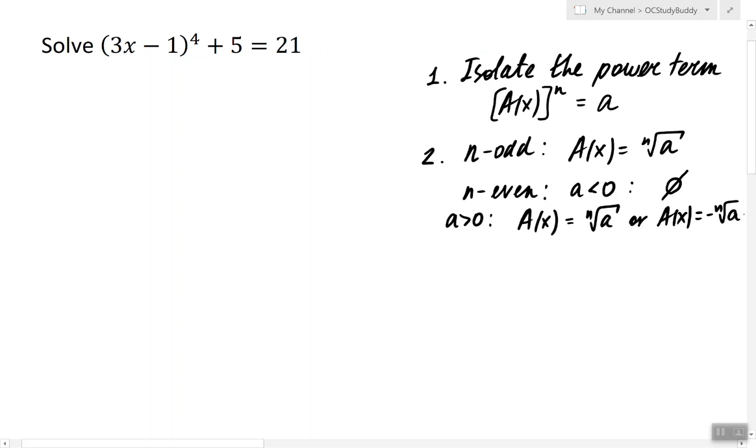So this is the plan and let's start. First we're going to isolate this power term 3x minus 1 to the power 4 by subtracting 5 from both sides of the equation.